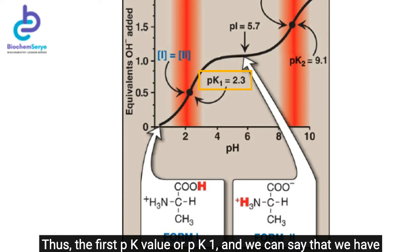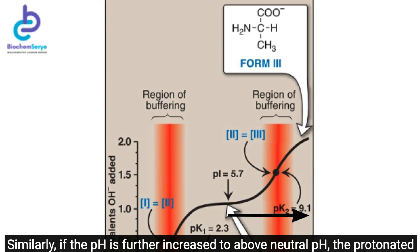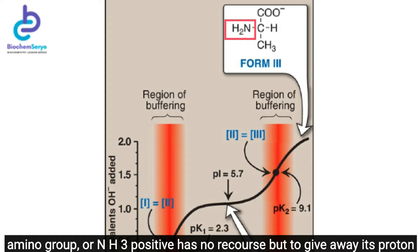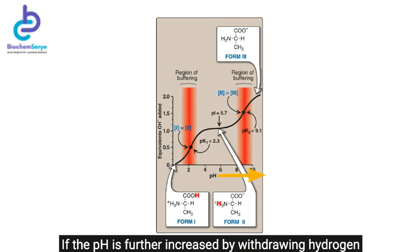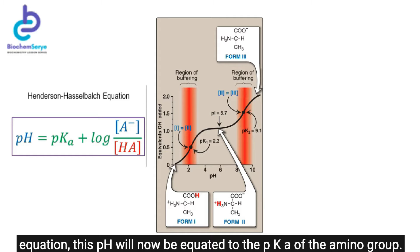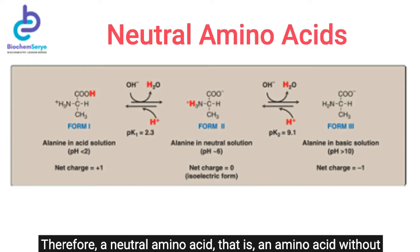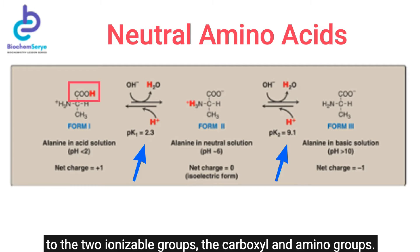Thus at the first pKa value (pKa1), we have equal concentrations of the carboxyl and carboxylate groups. Similarly, if pH is further increased above neutral pH, the protonated amino group (NH3-positive) gives away its proton and becomes the unprotonated amino group (NH2). At the point when there are equal parts of protonated and unprotonated amino group, that pH equals the pKa of the amino group. A neutral amino acid — one without any ionizable R-side group — has two pKa values corresponding to the two ionizable groups: the carboxyl and amino groups.